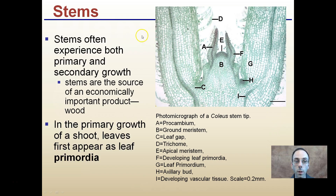Starting with stems in general, they often experience both primary and secondary growth. Remember, primary growth is growing upwards and downwards, while secondary growth is growth in the diameter of a plant.